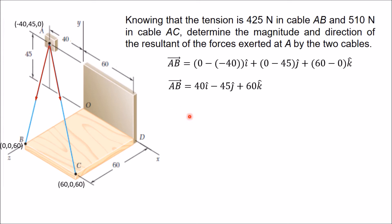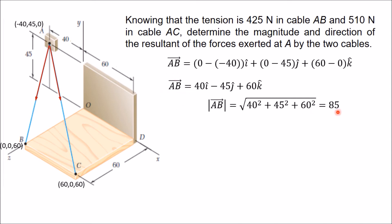The magnitude of AB is the square root of 40² + 45² + 60², which equals 85. Once you divide vector AB by this magnitude, you get the unit vector in the direction of AB. This unit vector represents the direction of the 425 N tension force.